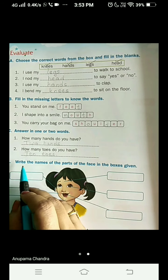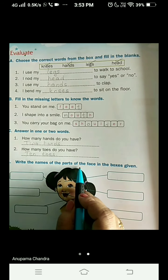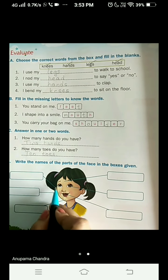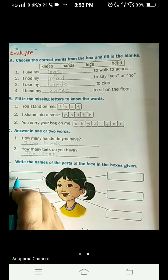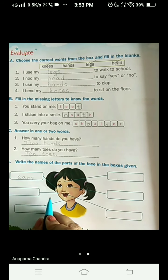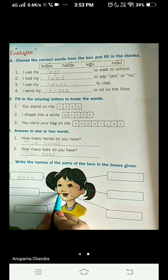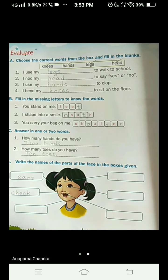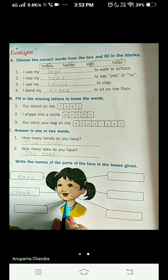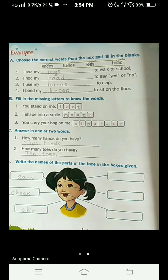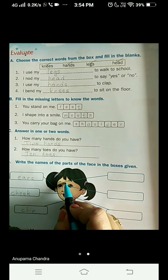Come to the D question. Write the names of the parts of the face in the boxes given. The first one, what is this? Ears, right? Write with me, E A R S, ears. Come to the next one. What is this part of your face called? Cheek, C H E E K, cheek. And the next one, what is this part of the face called? Chin, C H I N, chin.